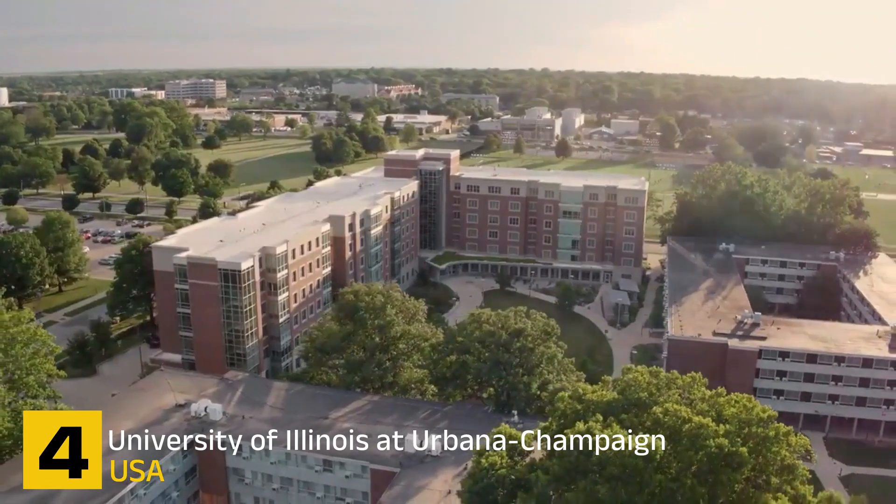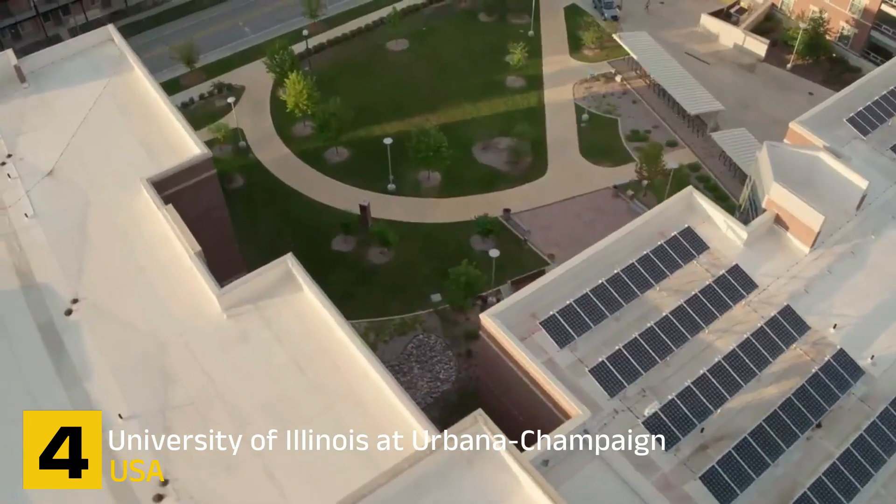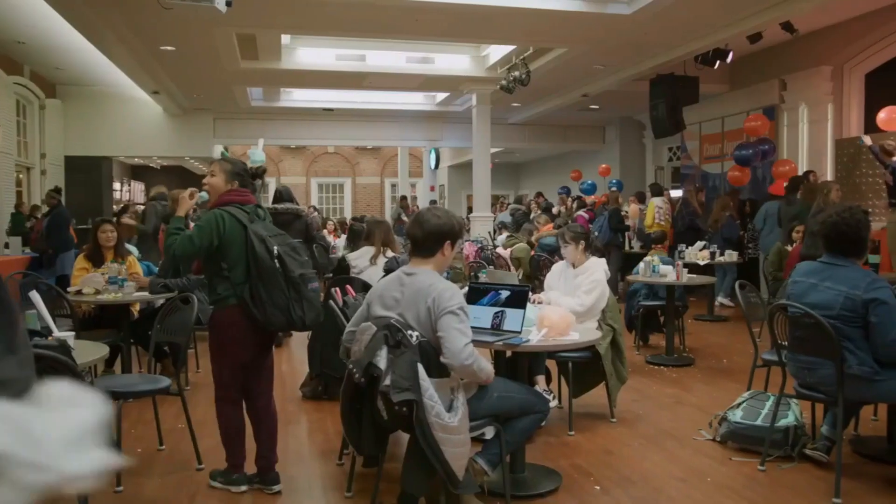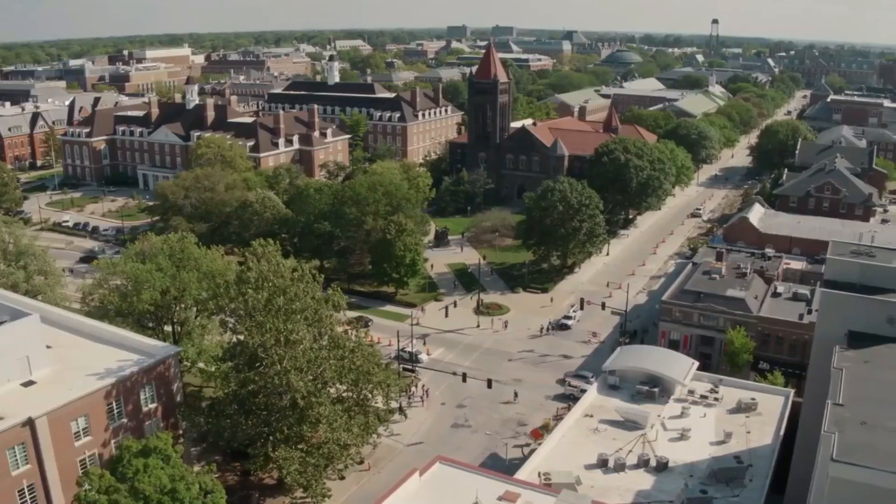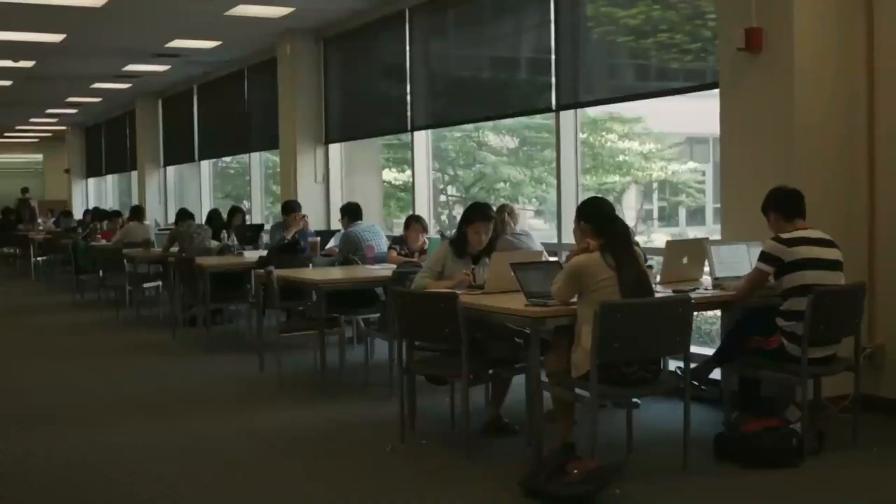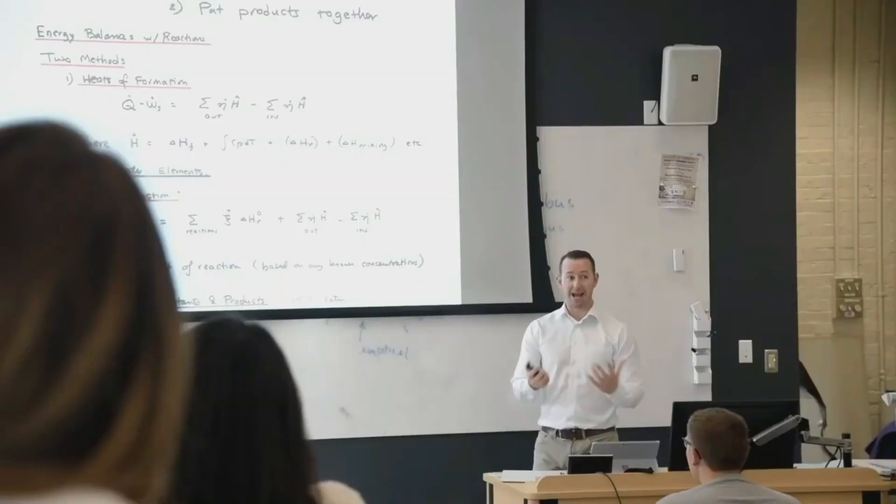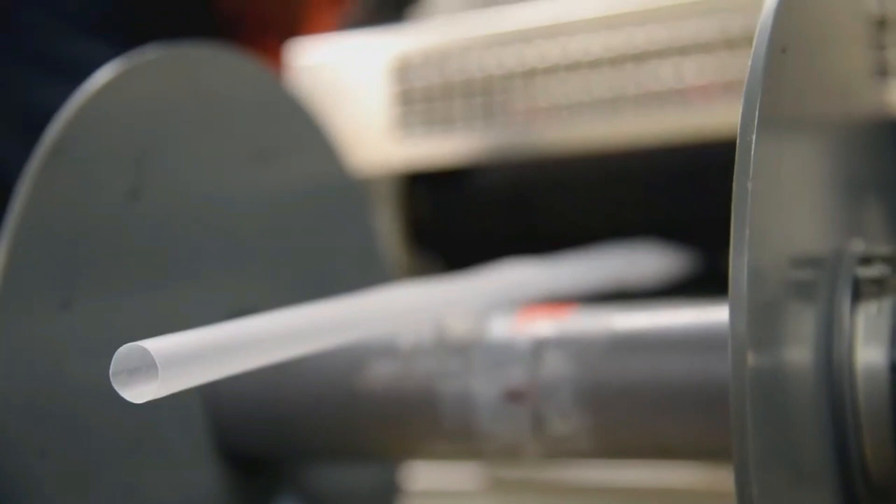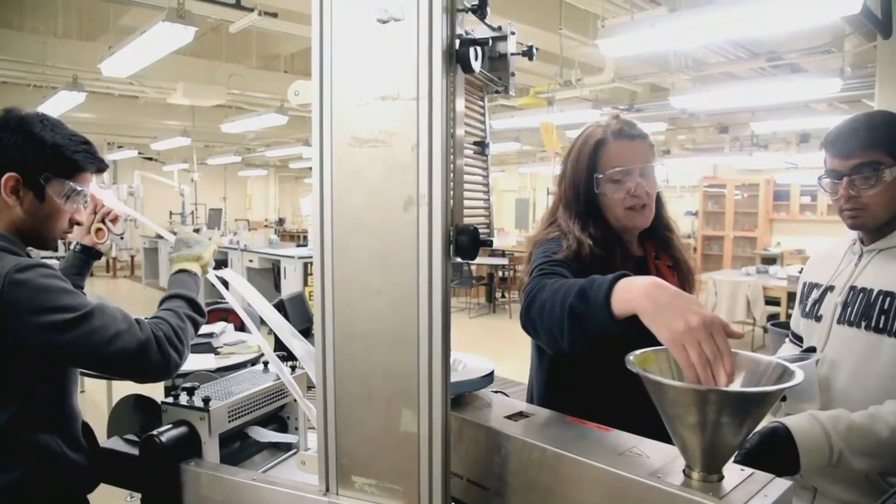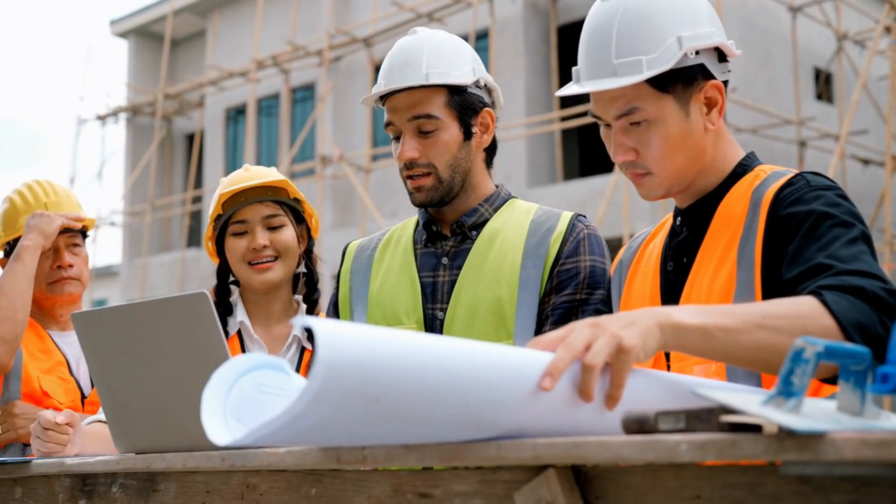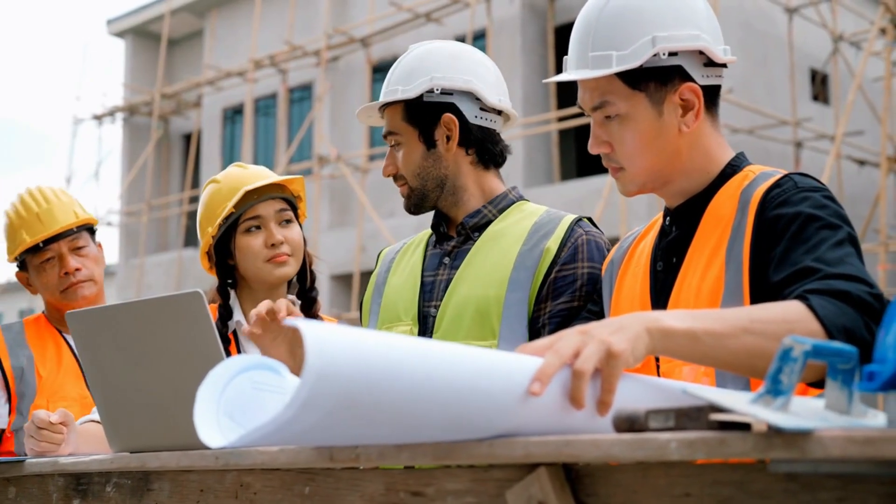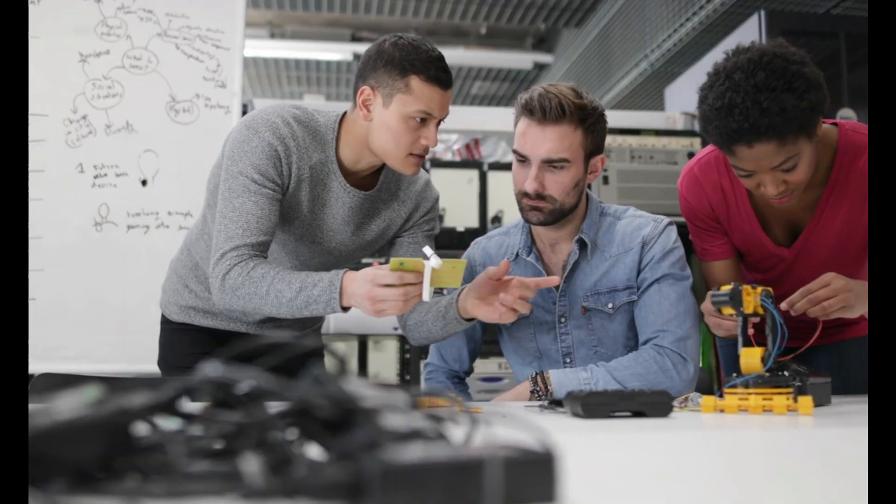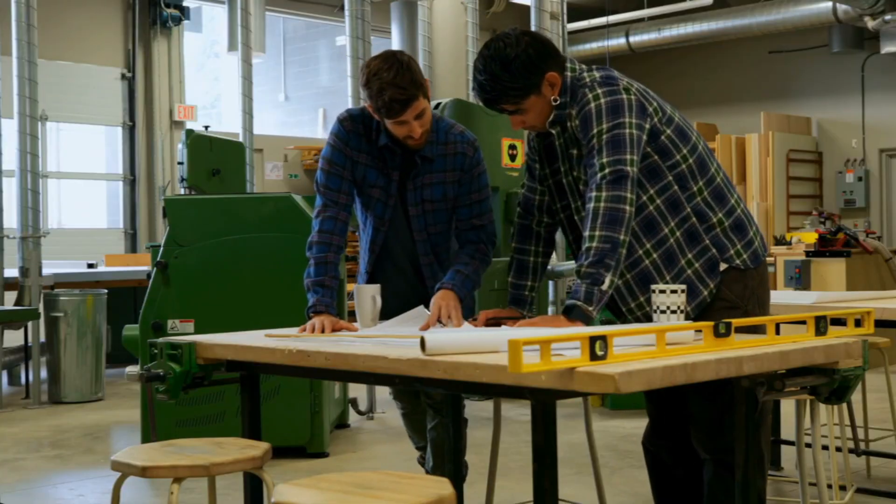Number 4. University of Illinois at Urbana-Champaign. The University of Illinois Urbana-Champaign, located in the twin cities of Champaign and Urbana in Illinois, is a globally recognized institution holding a world ranking of 14. The university's Department of Civil and Environmental Engineering offers a comprehensive civil engineering program that allows students to specialize in various areas within the field. This comprehensive approach ensures that students receive a broad foundation in civil engineering principles while also having the opportunity to develop expertise in their chosen area of interest.